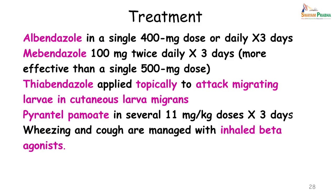Treatment of hookworm infestations is done with albendazole — a single dose or daily for 3 days. Mebendazole 100 mg twice daily for 3 days is found to be more effective than a single dose. Thiabendazole cream may be applied topically to attack the migrating larva in cutaneous larva migrans. Pyrantel pamoate may also be given. Wheezing and cough are managed with inhaled beta-agonists.